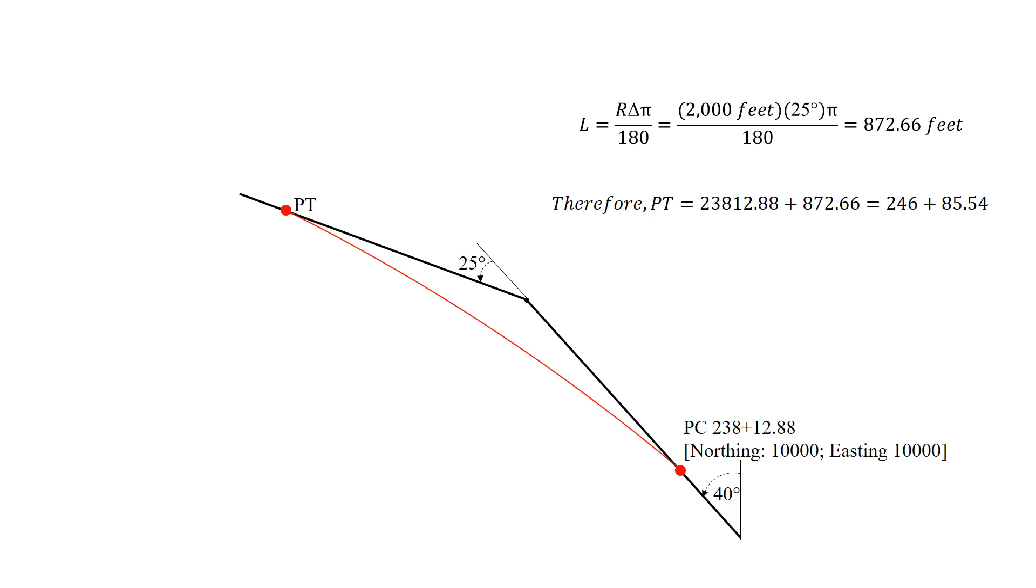Therefore our PT station is 238 plus 12.88, that's the station of our PC, plus that length of the curve, 872.66 feet, for a station of 246 plus 85.54.